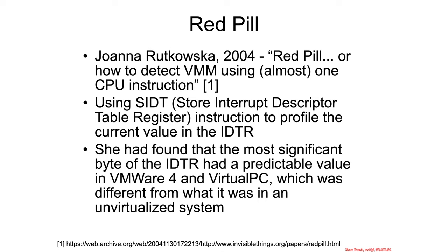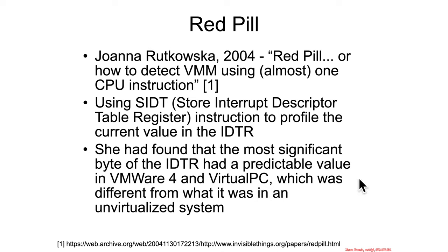So back in 2004, Joanna Rakowska posted an article called Red Pill, or How to Detect a VMM Using Almost One CPU Instruction. What she was doing was she found a recognition that the SIDT instruction, which stores the interrupt descriptor table, could be used to profile the location of the IDT in memory. She found that in virtualization systems like VMware or Virtual PC, it had a particular reliable address inside of VMs that was not the same address it would have outside of VMs when run on a native host.